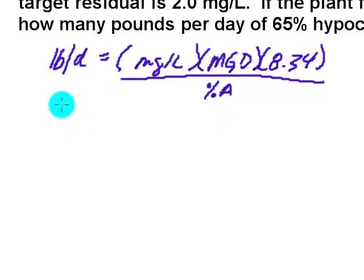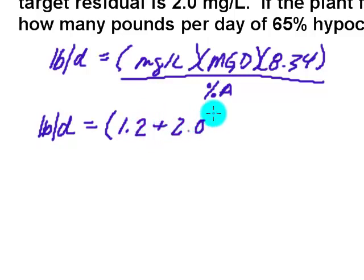I'm going to just start dropping in all the things I know. I don't know pounds per day, that's what we're looking for. Milligrams per liter, this is actually my dose. And from the previous slides, you saw that the dose is equal to the demand plus the residual. So I'm going to put in here my 1.2 of demand plus my 2 milligrams per liter of desired residual.